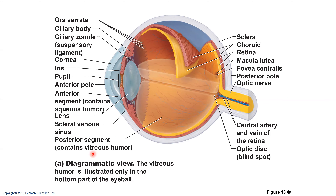The sclera is the posterior region — it protects and shapes the eyeball and anchors the extrinsic eye muscles; all those rectus and oblique muscles insert into the sclera. The cornea is the transparent anterior fibrous layer shown in green, and the cornea bends light as it enters the eye.